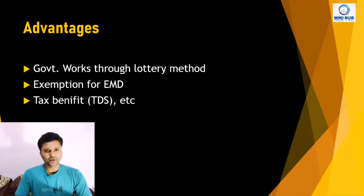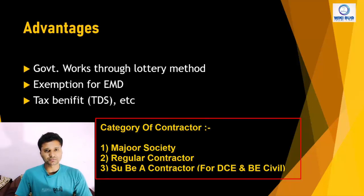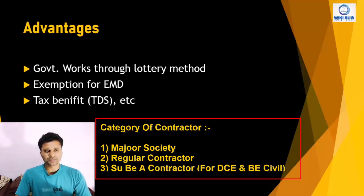There are three ways for contractorship. First is called Majur Sanstha (Labour Society). Second is Regular Contractor, who are not engineers but do contractorship. Third is Diploma and Degree Engineer, which is the BA Diploma registration — that is, the SUBE. So the three ways are: Majur Society, Regular Contractor, and Engineering Contractor, that is the SUBE.